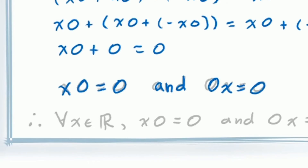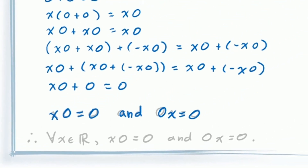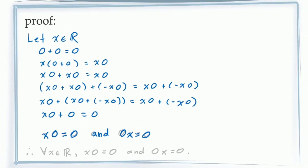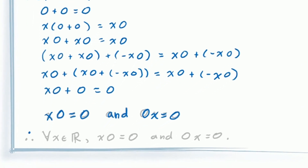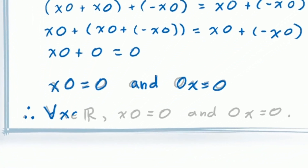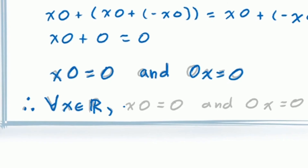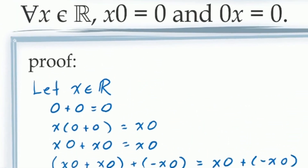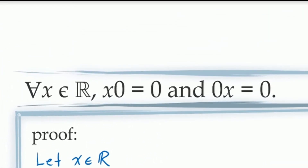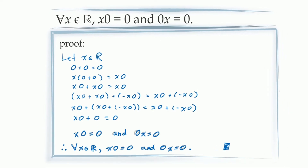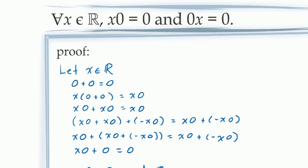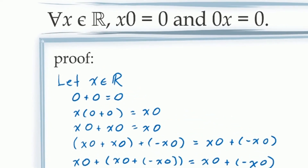Here we have a successful demonstration that for our arbitrary constant x, x×0 = 0. Because of universal generalization, we can now conclude this is true for all values of x in the real numbers. The conclusion we've reached is an exact restatement of the proposition we were trying to prove, which means this proof is done. To make sure it's done correctly, we should check that every step is justifiable using only the axioms of the real numbers.